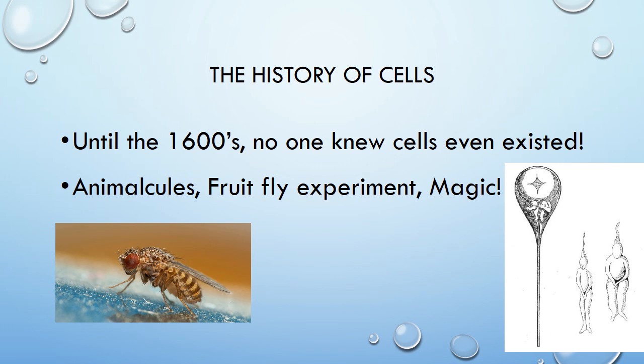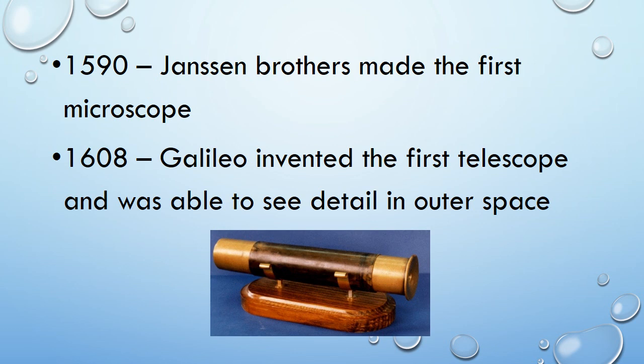People back in the day had lots of theories — some of them we'd now consider to be calling everything magic. It wasn't until the 1600s, when we could see very small things called cells, that we could start to investigate this tiny living world. In 1590, the Janssen brothers made the first microscope. Just for a time reference, in 1608 Galileo invented the first telescope and could see detail in outer space — around the same time we could see very small things and very distant ones.